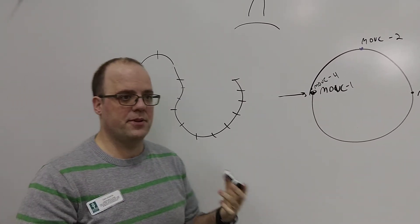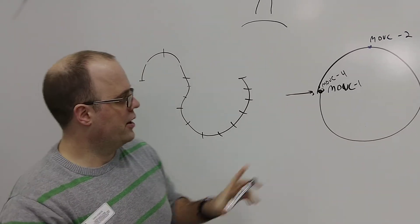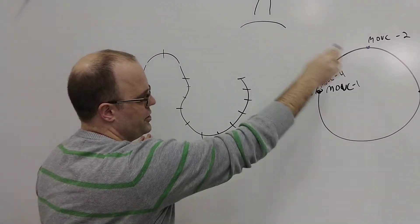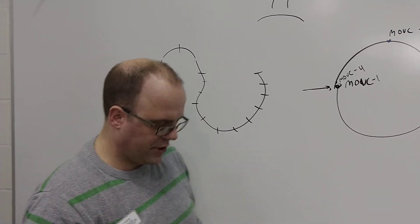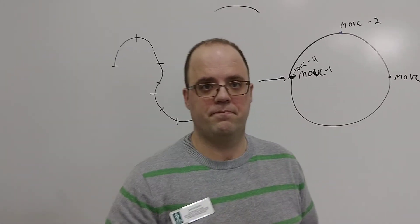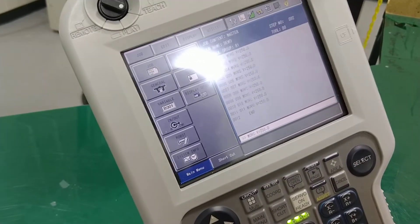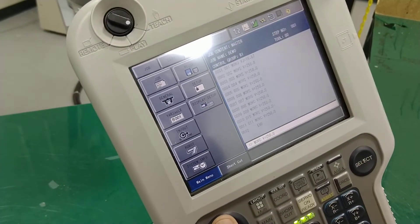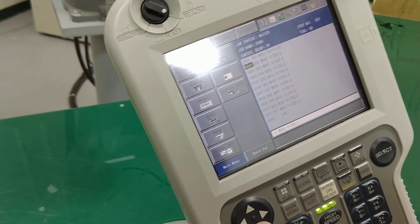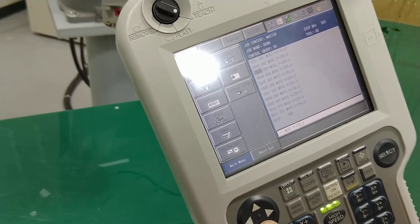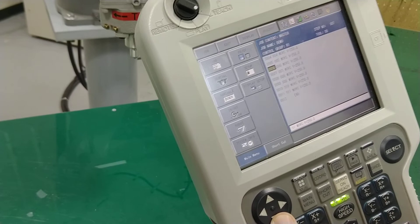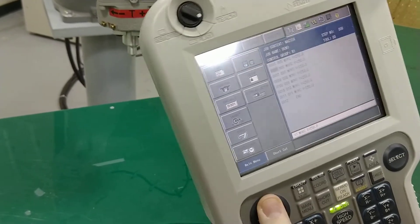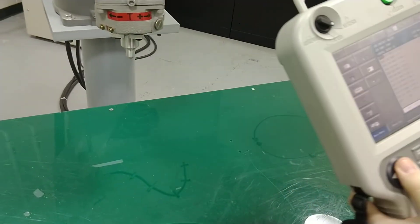I'm about to go over to my lab where I've set up a demo, and I can show you how this looks — we'll do a spline and then a full circle. On the teach pendant, I have a Move J already set up, and then there are Move S's for my spline motions, and the circle points right beside them.